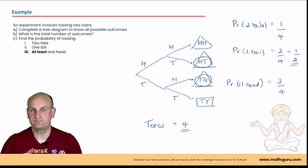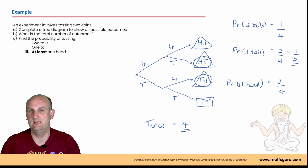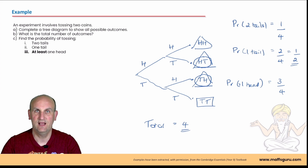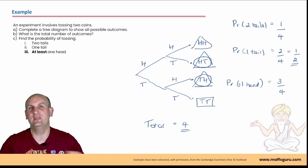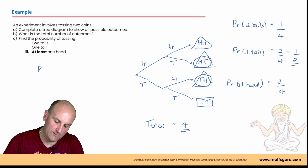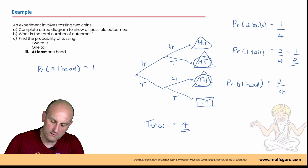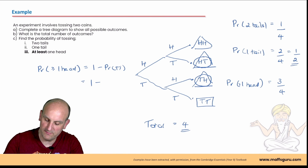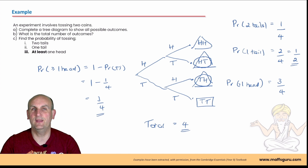There's another way to find the probability of at least one head using complements. The probability of at least one head equals one minus the probability of two tails, which is one minus one quarter, giving three quarters. This approach — working out what you don't want and subtracting from one — becomes very useful later in Years 10, 11, and 12.